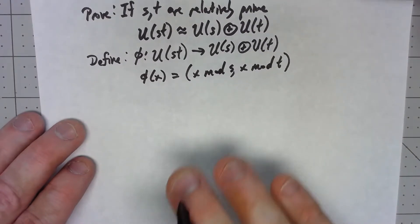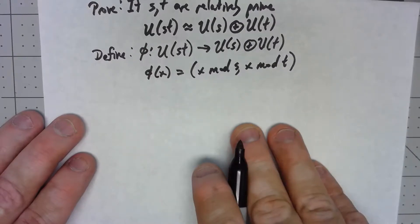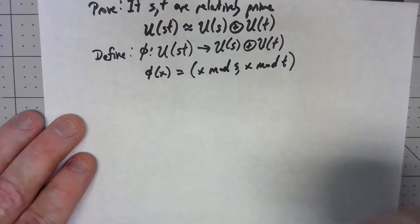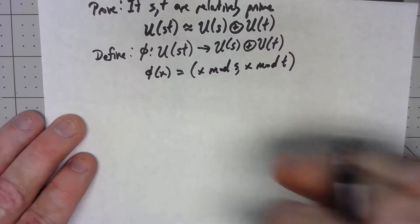So to show that this thing actually is an isomorphism, we have to show that it's one to one, onto, and has the isomorphism homomorphism property.